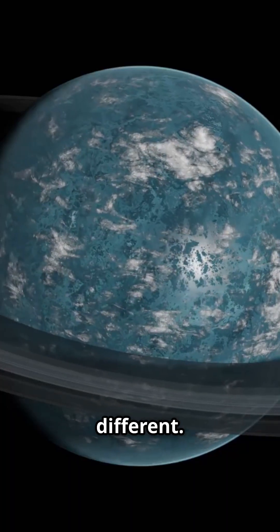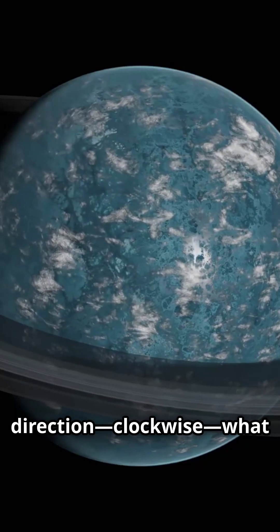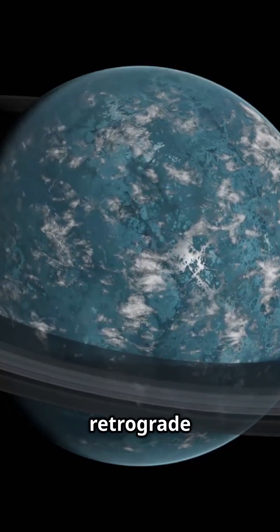But Venus is different. It spins in the opposite direction, clockwise, what scientists call a retrograde spin.